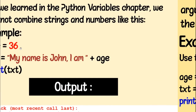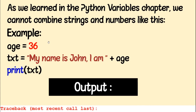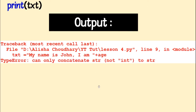Here's an example: age is equal to 36. Age is a variable. Then txt is another variable, and in this txt variable it says 'my name is John, I am' plus age. What I want in the output is 'my name is John, I am 36'. But when I print txt, this is not the output I wanted — there is an error. The type of error is: can only concatenate string, not integer, to string.